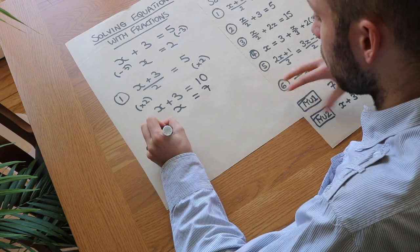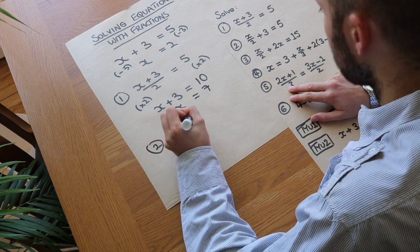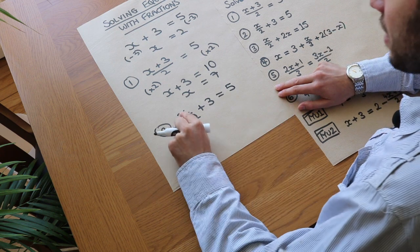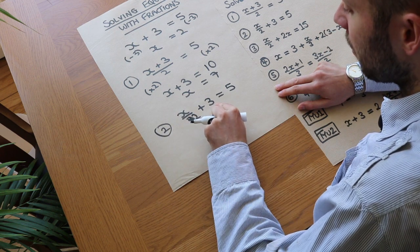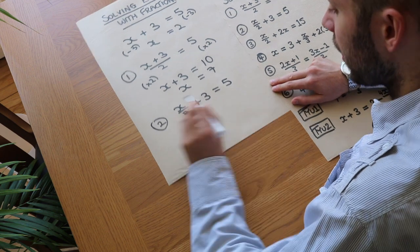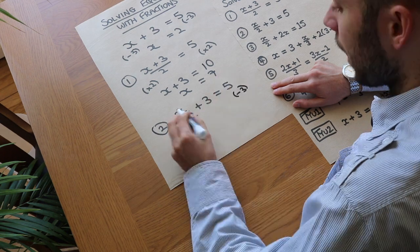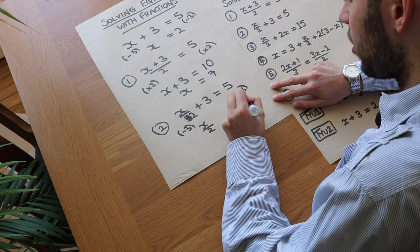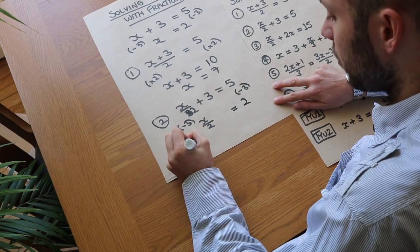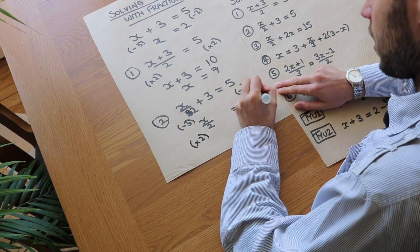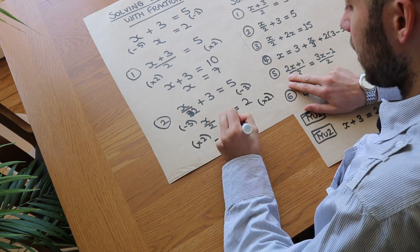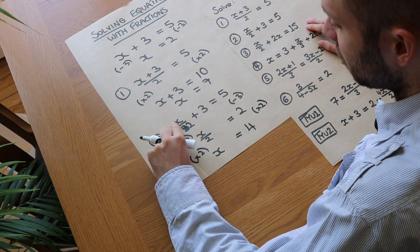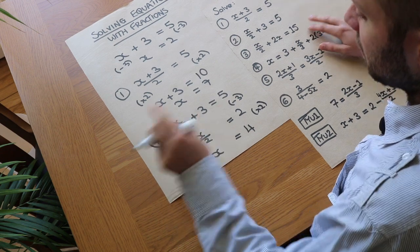Question 2: x over 2 plus 3 is equal to 5. The story of what's happening to x is: we're dividing x by 2 and then adding 3. So we undo the add 3 first by subtracting 3 from both sides, giving us x over 2 equals 2. Then we multiply both sides by 2 to get rid of the over 2, leaving x equals 4. We can check by substituting back: 4 divided by 2 is 2, plus 3 is indeed 5.